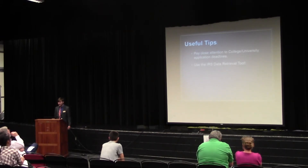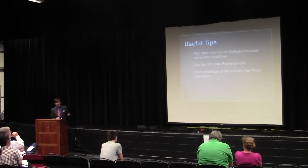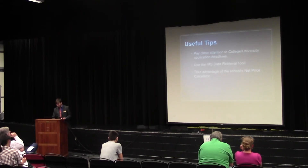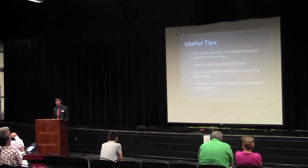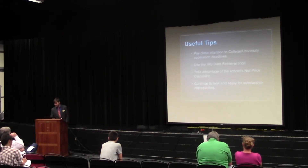If you can, use the IRS Data Retrieval Tool — it can help streamline the process for students selected for verification and will also provide a more accurate Expected Family Contribution. Take advantage of the school's Net Price Calculators — all schools receiving federal financial aid must have these. Enter your information as accurately as possible and use that as a tool to get a good picture of what financial aid might be available to your student. Also, continue to look for scholarship opportunities — there are tons of them out there. They vary in terms of how much is available, what the requirements are, and deadlines. Do your due diligence, and have your student do the same, to get all the scholarships they can to help mitigate the cost of college.